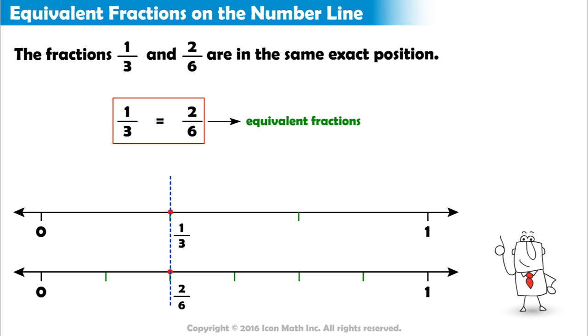These equivalent fractions have different numerators and denominators. Because in each case, the same whole was divided differently. Our first number line is split into three equal parts, while the second number line is split into six equal parts. The number of equal parts changed, so the fractions changed.